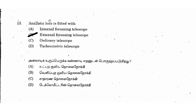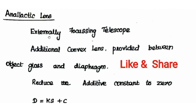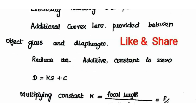Next question: an analytic lens is fitted with — the right answer is option B: external focusing telescope. The analytic lens is an additional convex lens provided between the object lens and the diaphragm/eyepiece. It eliminates the additive constant. Reducing the additive constant to zero is the purpose of fitting the analytic lens — this is an important MCQ point.